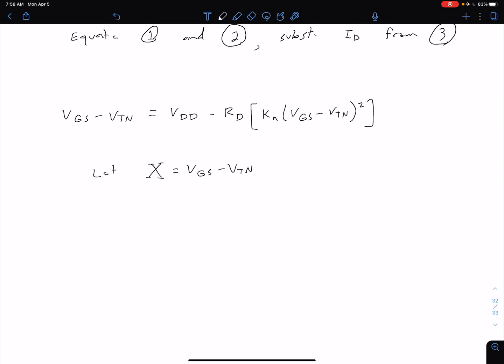We're going to set this up to be a quadratic equation. If we move everything over to the left side, we're going to have RD times KN times our X squared, and then we have plus X which was initially on that left side, and then we're going to have minus VDD is equal to zero.